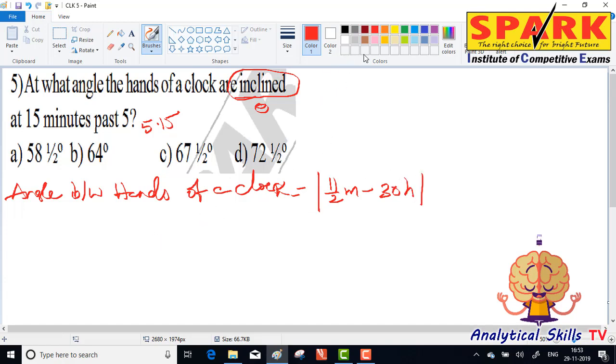So the angle between hands at 5:15 is equal to 11 by 2 times 15, that's 15 minutes, minus 30 times 5.